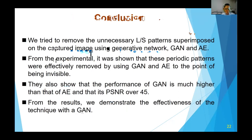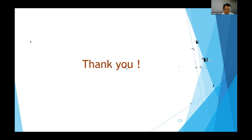In conclusion, we tried to remove the unnecessary line-space pattern superimposed on the captured image using the generative network GAN and the autoencoder. From the experiments, it was shown that these periodic patterns were effectively removed by using GAN and autoencoder to the point of being invisible. It was also shown that the performance of GAN is much higher than that of the autoencoder, with PSNR over 45. From these results, we demonstrated the effectiveness of the technique with GAN. That's all for my presentation. Thank you for your attention.